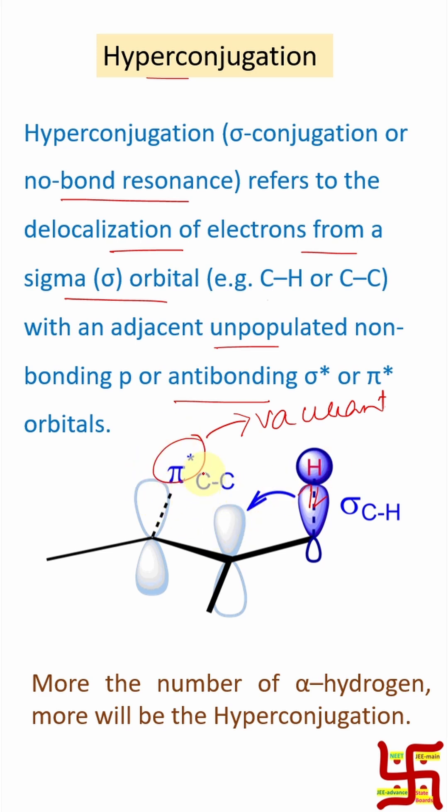And remember, if the anti-bonding orbital gets electron density, obviously bond order will be reduced. And if I say bond order reduces, it means bond length will increase because we know single bond length is more than double bond.